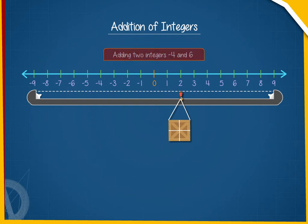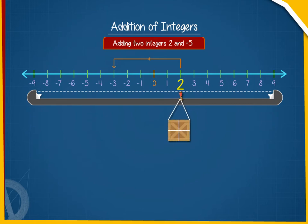Now, if we want to add 2 and minus 5, we will start from 2 and shift 5 numbers towards the left side of 2.